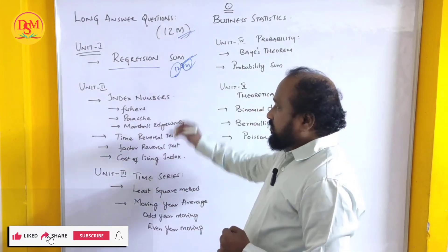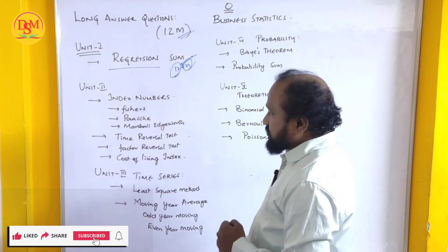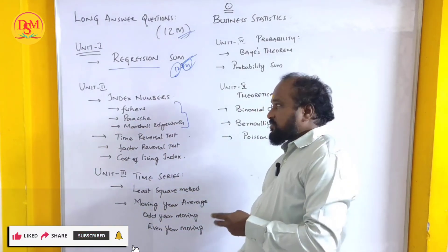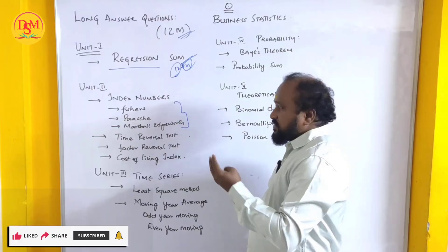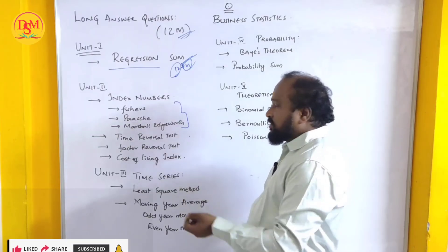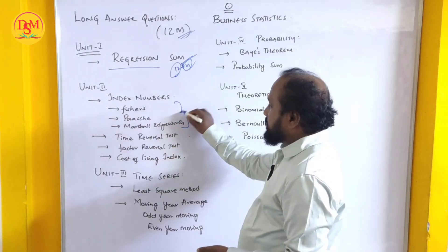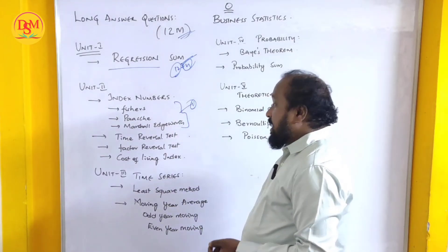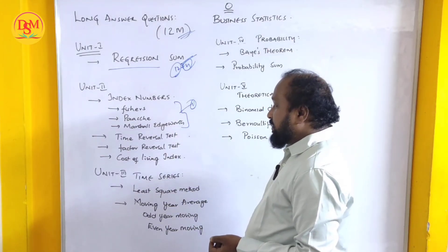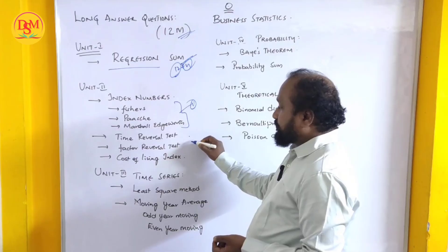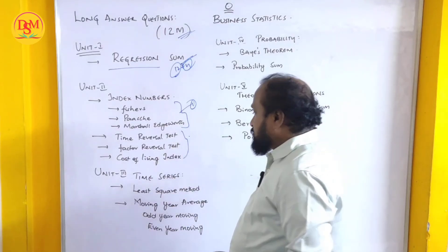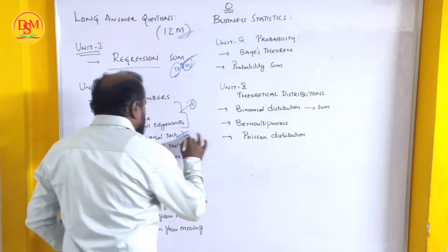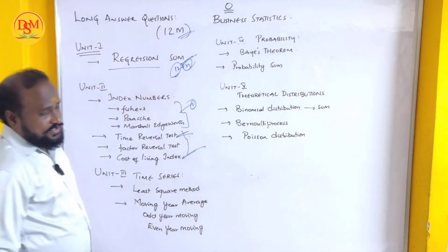Unit number 2 is Index Numbers. From this, Fisher's Ideal Index Number, past years Paasche's and Laspeyres' related sums — one sum I have covered — and another sum will be from Cost of Living Index or Time Reversal Test.